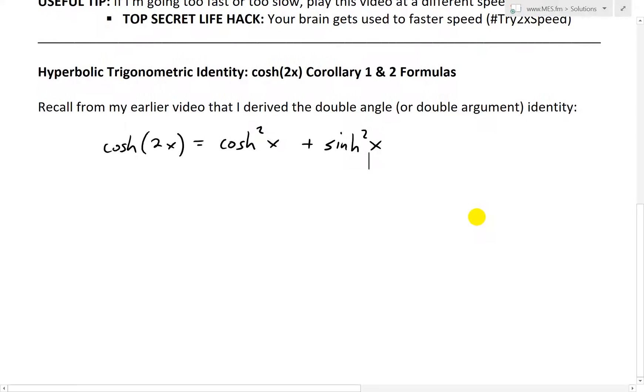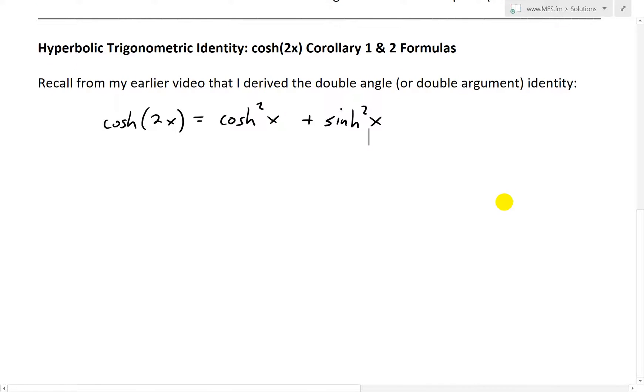And now this is called a double angle, because you have this angle 2x, which is double the x angle. So now that we have this just written down from my earlier video, now what I'll do is recall, we can just rewrite this in several different forms that are also used often.